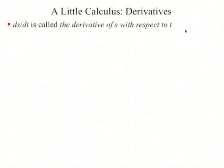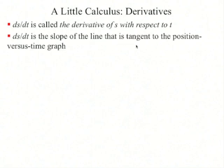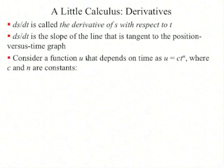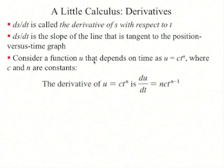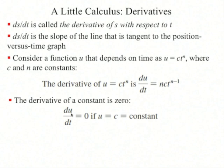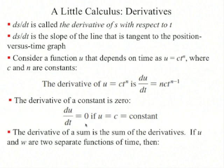ds/dt is called the derivative of s with respect to t, and is the slope of the line tangent to the position versus time graph. If we have a function which is a power law — c times t to the power n, where c and n are constants — the derivative is n times c times t to the power n minus 1. The derivative of a constant is zero. Also, the derivative of a sum is the sum of the derivatives: d/dt of (u + w) equals du/dt plus dw/dt.